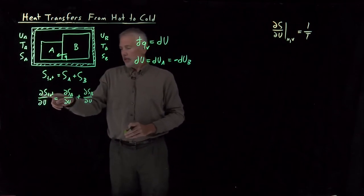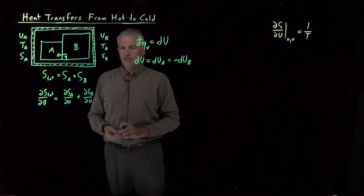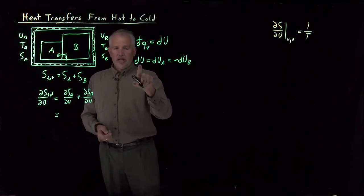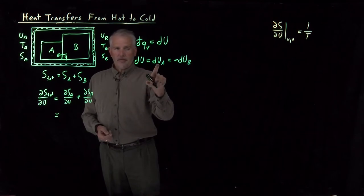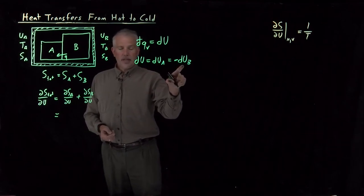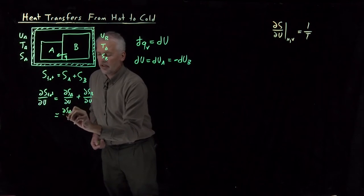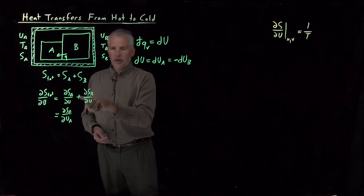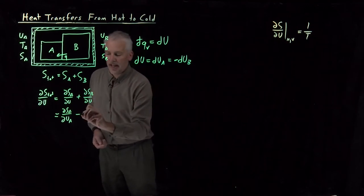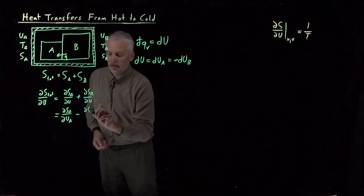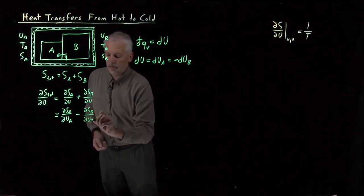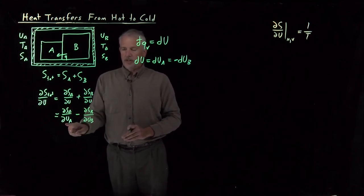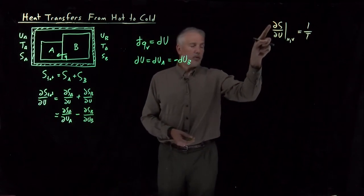So I've taken d/dU of both sides of this expression. But now I can write this, since we know that the change in the energy is opposite in sign for A than it is for system B. I'll write DU as DUA in this first derivative. But for the second derivative where we're talking about system B, I'll write it as negative DUB.